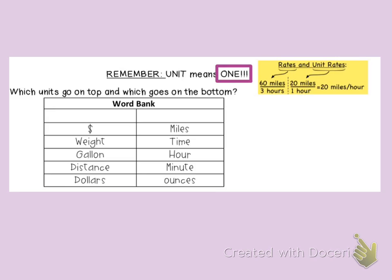So if we are talking about a unit meaning one, are we talking about money, weight, gallon, distance, or dollars? Or are we talking about miles, time, hour, minute, ounces? These are the typical words you will see in a word problem that tell us which word and number belong on the top ratio and which belong on the bottom. Things like miles, time, and hours are units of measure — those go on the bottom, also known as the denominator, and the other values go on top.